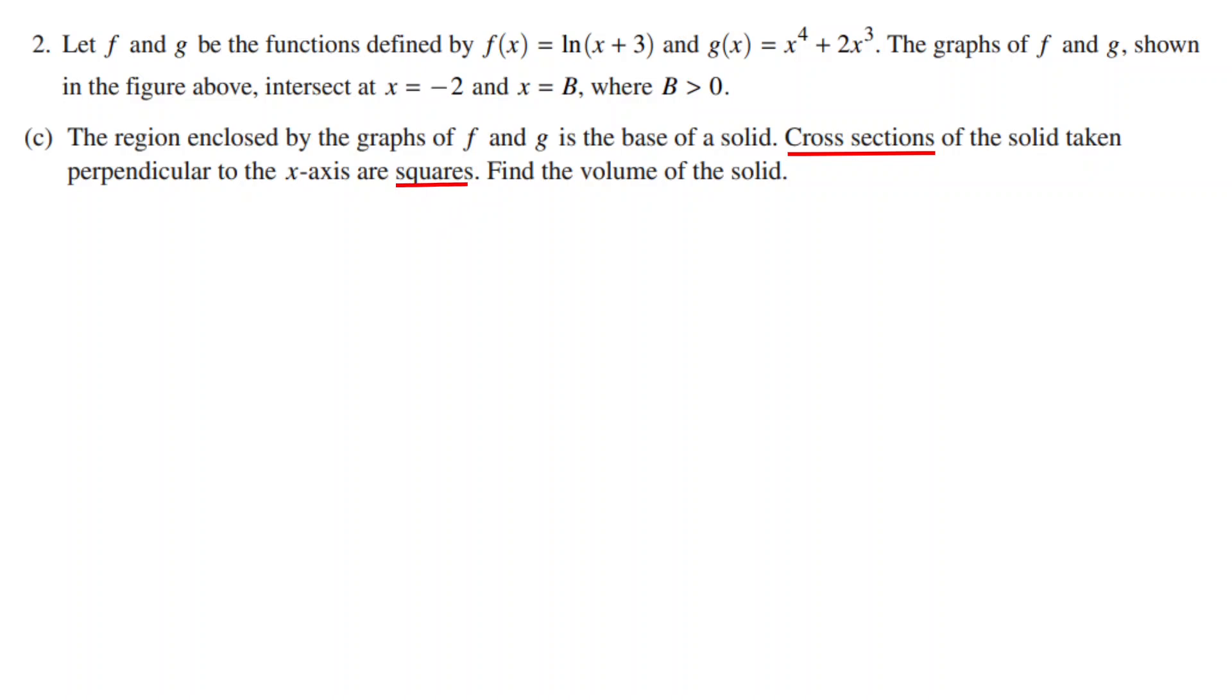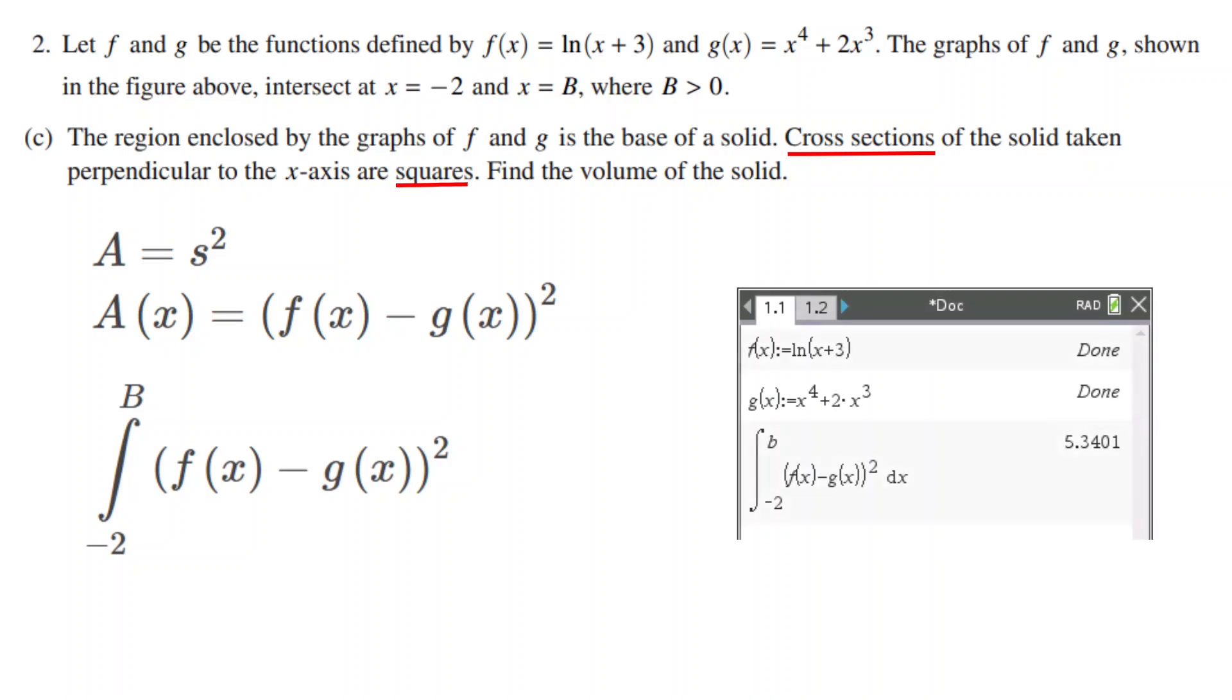To find the volume, we integrate the area of a cross section. For squares, area is side squared. The side we are looking for is the distance from the top function to the bottom function. From this, we get an integral from -2 to b of (f(x) - g(x))^2 and we plug it into our calculator. We can get our answer 5.340.